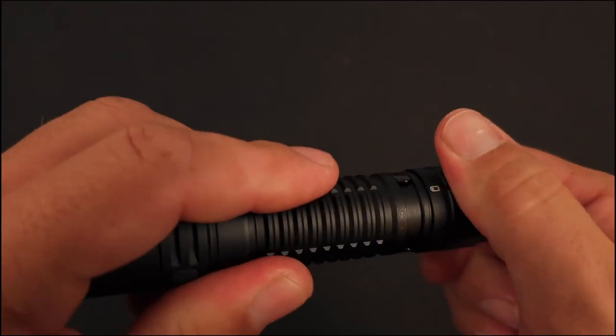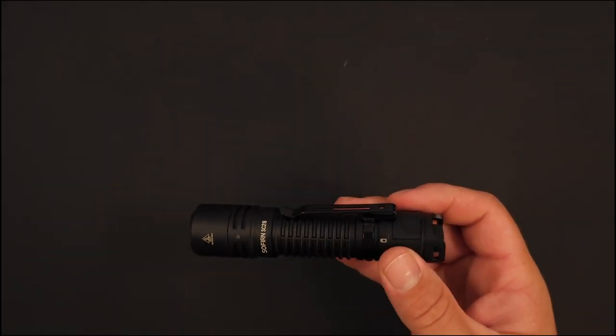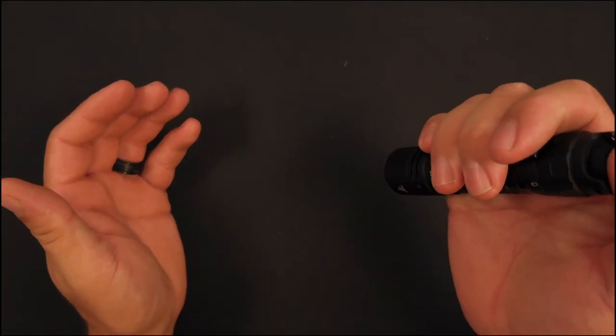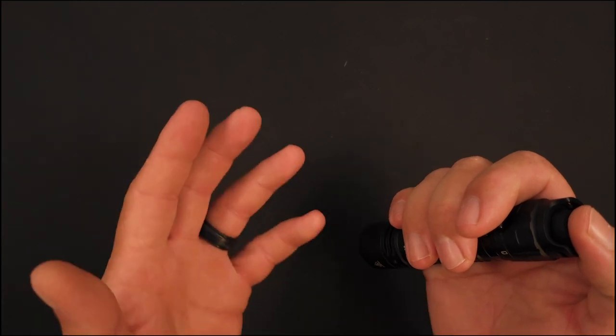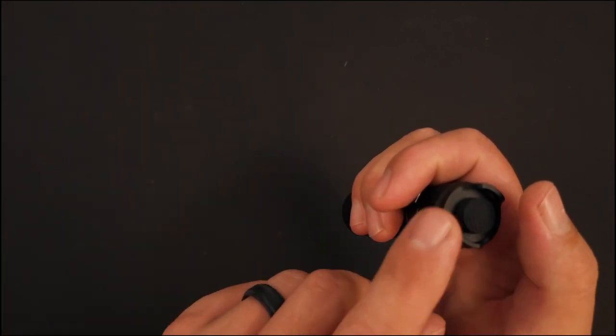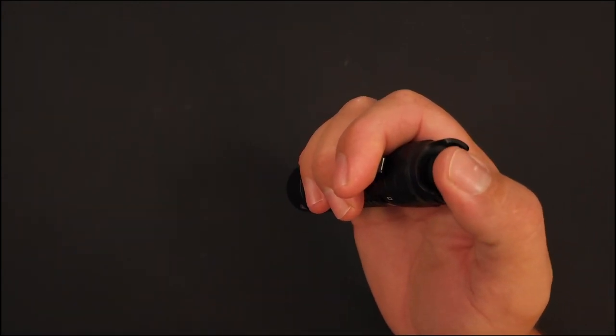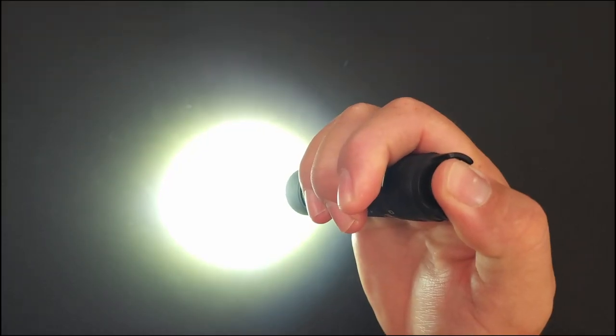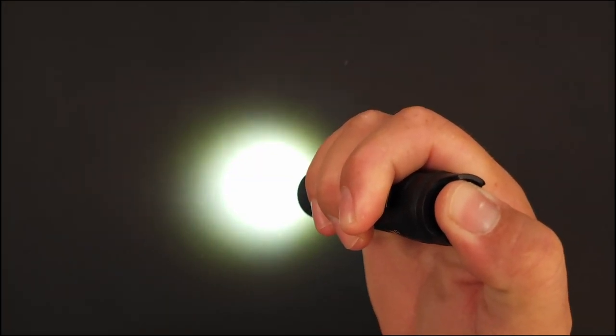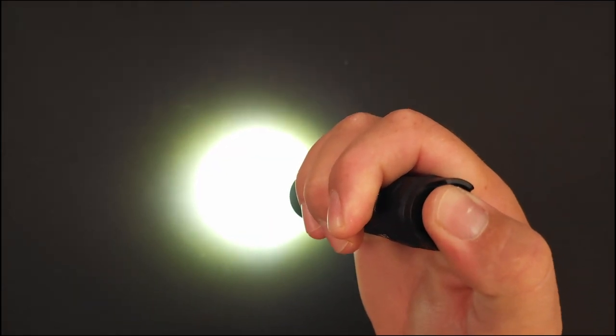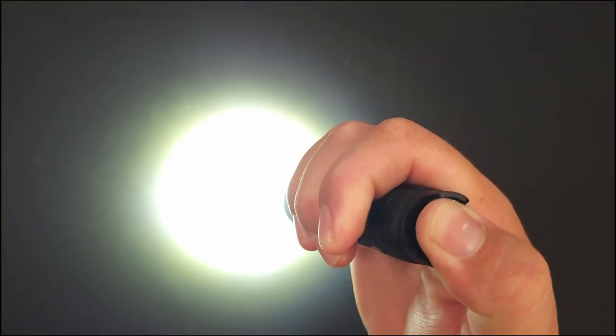I told you earlier that this has three separate modes and I promise you I wasn't lying. I have it set in general mode right now, and what general mode means is it's going to be able to run through moonlight, low, medium, high, and turbo. That runs through just with this clicky switch here. All you got to do is give this clicky switch a half press, and if you keep cycling through, it'll go through all your separate modes. Here we have your one lumen moonlight mode, 100 lumens for low, 350 for medium, 1200 for high, and 2800 lumens here for turbo.